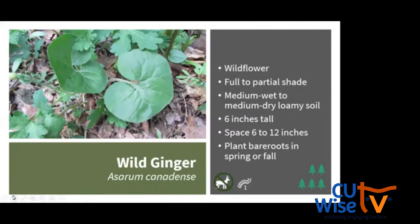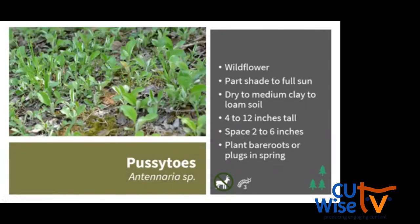Wild ginger emerges in spring but its foliage remains throughout the growing season. It prefers full shade but can do okay in part shade, and likes medium loamy soil but can tolerate slightly acidic soil. It is a spreader and will form colonies — that theme carries through many of these plants. It produces a dark red flower that you can often find under the leaf cover at the base of the plant. It's deer resistant, supports one species of caterpillar, and you can plant bare roots in spring or fall.